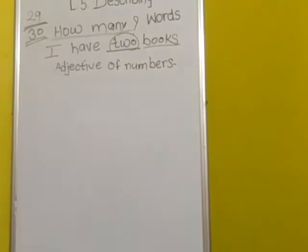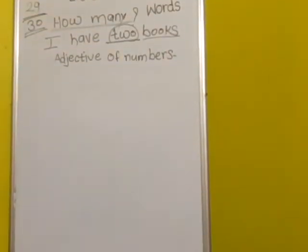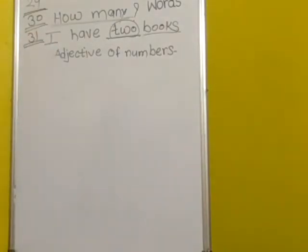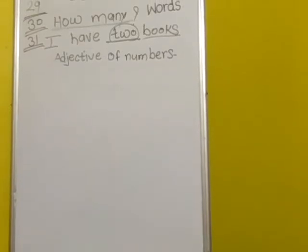Now page number 31 - a very easy topic. We have to find adjectives of number, that means describing words that tell how many. Read the story: can you see four foxes playing in the grass? There are four foxes - count them: one, two, three, four. Can you see two caterpillars on the leaves? One butterfly flies close by. Caterpillars is the noun and two is the describing word.